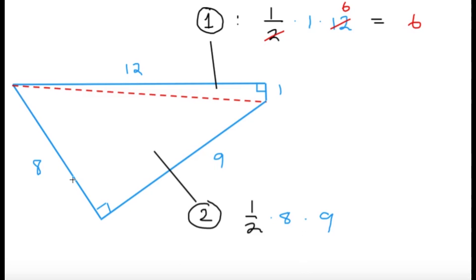The second one, the legs are 8 and 9, so 1 half times 8 and 9, 2 and 8 cancels nicely, so 4 times 9, that gives you an area of 36.